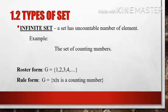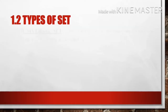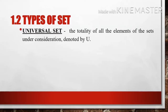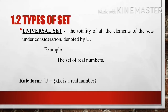Lastly, we have the universal set — the totality of all the elements of the sets under consideration, which is always denoted by the capital letter U. Example: the set of real numbers. So we have the universal set = { X | X is a real number }. Take note that the universal set is mostly used in operations on sets.